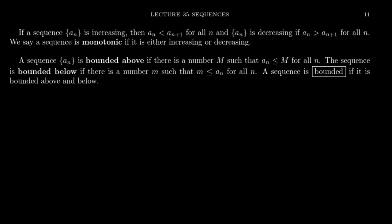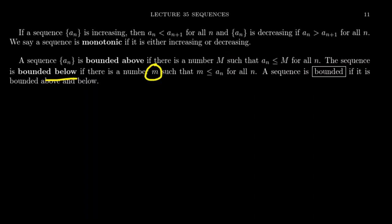Another term related to this is the idea of a bounded sequence. We say a sequence a_n is bounded above if there exists some number M which is bigger than all the terms in the sequence. Similarly, we say a sequence is bounded below if there's some number m that's smaller than all the terms in the sequence. This idea of being bounded above and bounded below is a discrete analog of finding an absolute maximum or minimum on a graph. We say a sequence is bounded if it's bounded above and below.